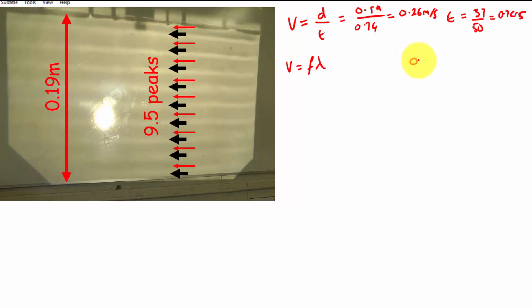So I can get the wavelength because it will be the distance divided by the number of waves. The distance was 0.19, divide that by the number of waves, which is 9.5. That comes out as 0.02 meters, so lambda is 0.02 meters.